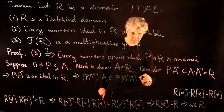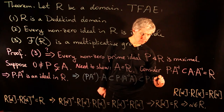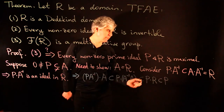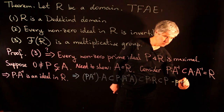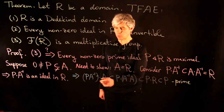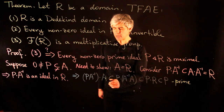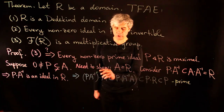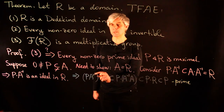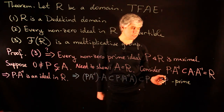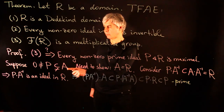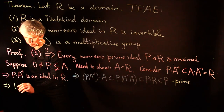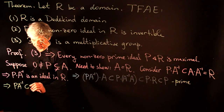We have (P·A⁻¹)·A ⊆ P·R = P. So the product of ideals P·A⁻¹ and A is inside the prime ideal P. If a product of two ideals is inside a prime ideal, one of the factors must be inside P — otherwise we could choose elements in each factor not in P and get a product outside P inside P, a contradiction. Our assumption was A ⊄ P, so P·A⁻¹ ⊆ P.